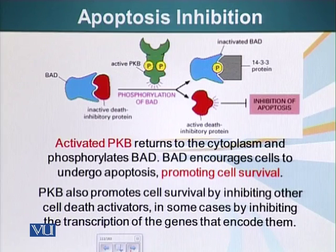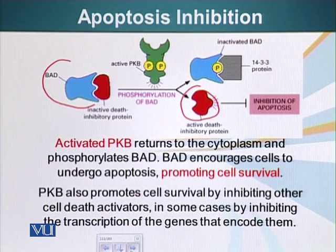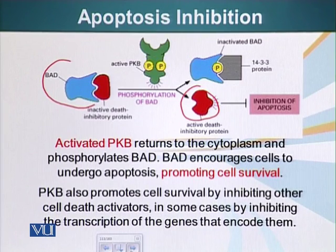In the cytoplasm, PKB phosphorylates several proteins. One of them is BAD. This protein BAD is basically inhibiting a protein that inhibits apoptosis. So the death inhibitory protein, in its active form, inhibits apoptosis. When BAD is phosphorylated, it releases that protein and allows it to do its job, which is to keep the cell alive. If PKB is not activated, BAD is not phosphorylated and the cell will go through apoptosis — active BAD will signal the cellular machinery that the cell needs to undergo apoptosis.